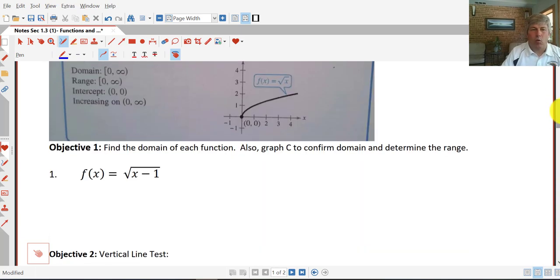In line with objective one, we want to find the domain of each function. We also want to graph this to confirm the domain and determine the range. So our function, square root of x minus one, it's a square root function, so we can only take square root of zero or positive numbers. So x minus one has got to be greater than or equal to zero, so x has got to be greater than or equal to one. Everything from one to infinity is going to be a valid input. So using our interval notation, one to infinity is our domain.